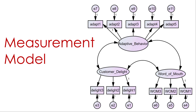In this example I've got three unobservable variables — variables that I really can't observe — which is adaptive behavior, customer delight, and word of mouth. How do you capture these unobservables? Usually we're asking survey questions. Adaptive behavior had five survey questions listed as adapt one through five, customer delight had three, and word of mouth had three. Those squares are the observables that are supposed to capture the unobservable construct in our model.